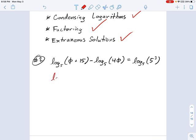I'm just going to go ahead and condense these two logarithms on the left. They have the same base - it's both a log base 5. So I can turn this into log base 5 of (φ + 15) divided by 4φ. On the right, I'm not changing anything for now. I'm just going to leave that log base 5 of 5 cubed. Remember, this is the quotient rule. If you need to look up how the quotient rule works, this might be a good time. We'll be using it a lot.